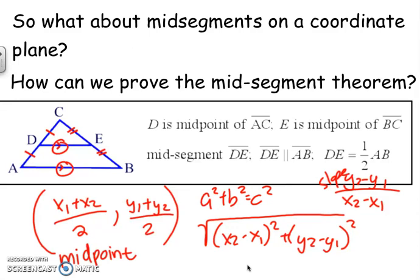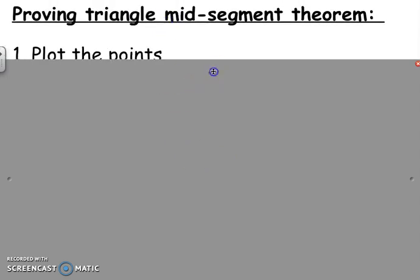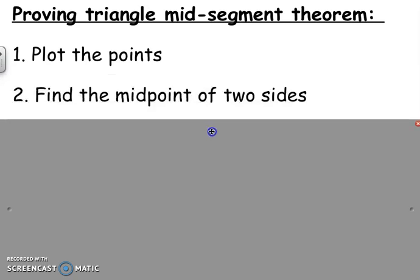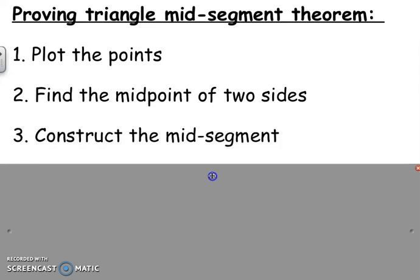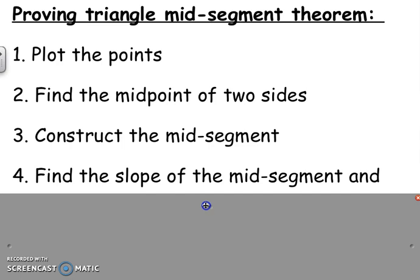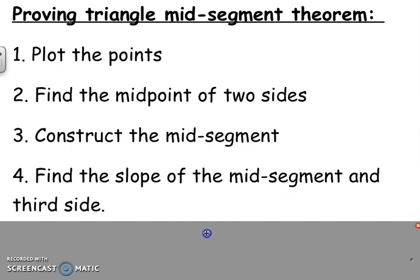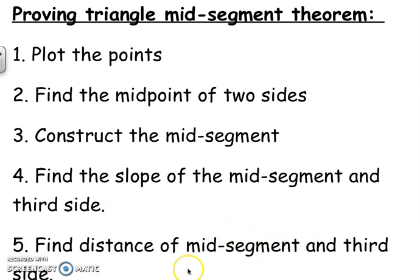First, make sure that points D and E are midpoints using the midpoint formula. Second, make sure that DE is parallel to AB using the slope — they'll be the same slope if they're parallel. Lastly, make sure that the DE segment is half of AB, using the distance formula or the Pythagorean theorem. So: plot your points and draw your triangle, find the midpoint of both sides, draw the segment connecting your two midpoints, find the slopes of the mid-segment and the third side, and confirm the distance relationship.